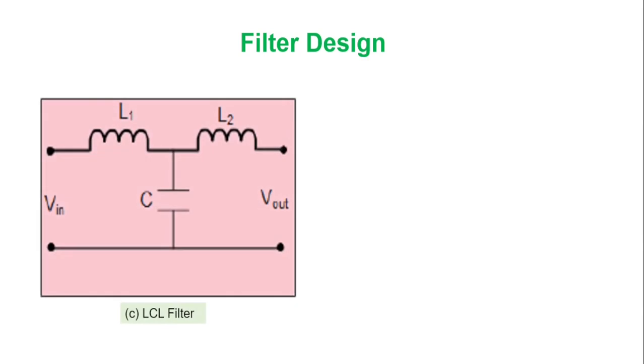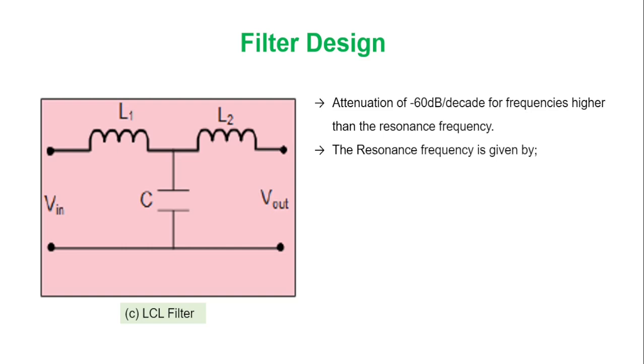It gets a higher attenuation of -60 decibels per decade for frequencies higher than the resonance frequency. The resonance frequency for an LCL filter is given by 1 over 2π times the root of (L1+L2) divided by the product of L1, L2, and the capacitance.